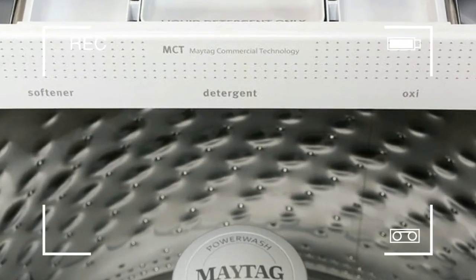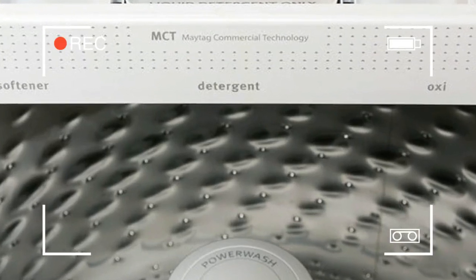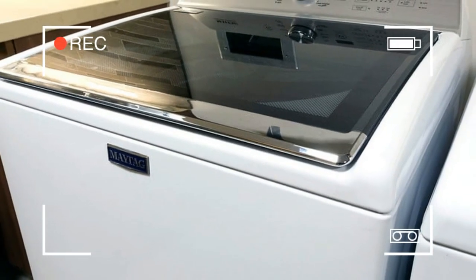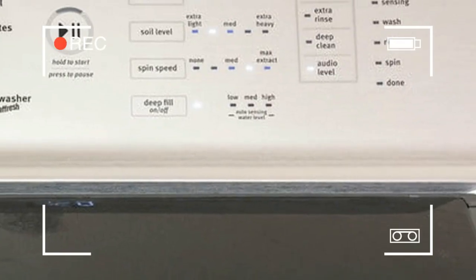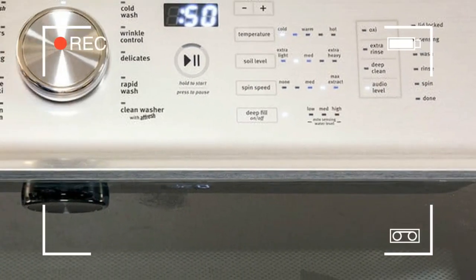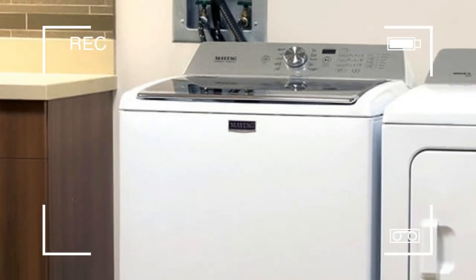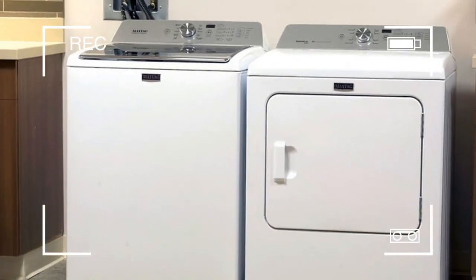This white Maytag top load washer appears fairly nondescript at first glance. The control panel tells a different story, however, with multiple setting options, a digital timer, and a large play-pause button to start loads and put them on temporary hold.